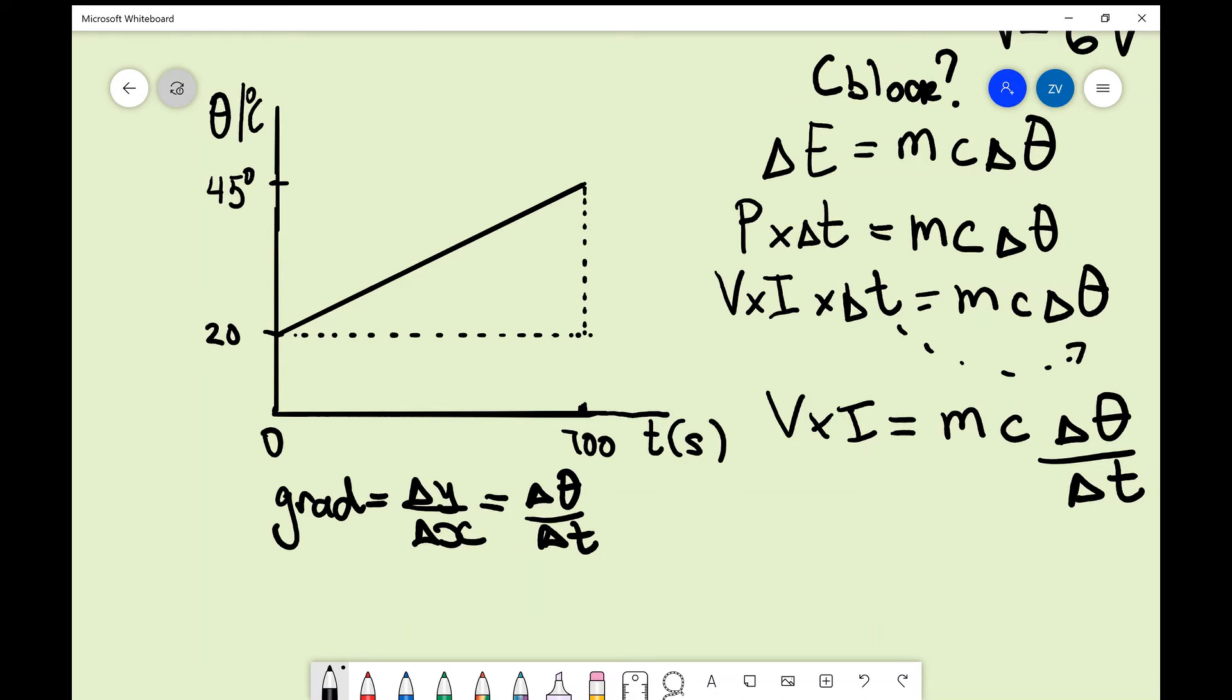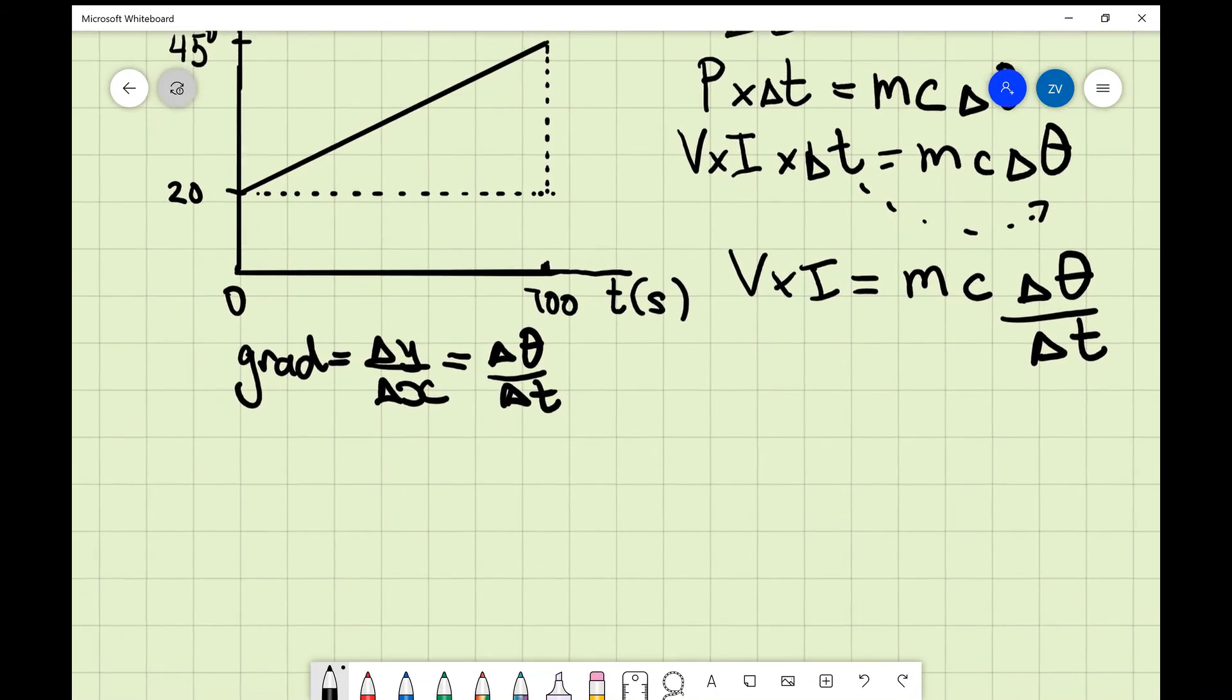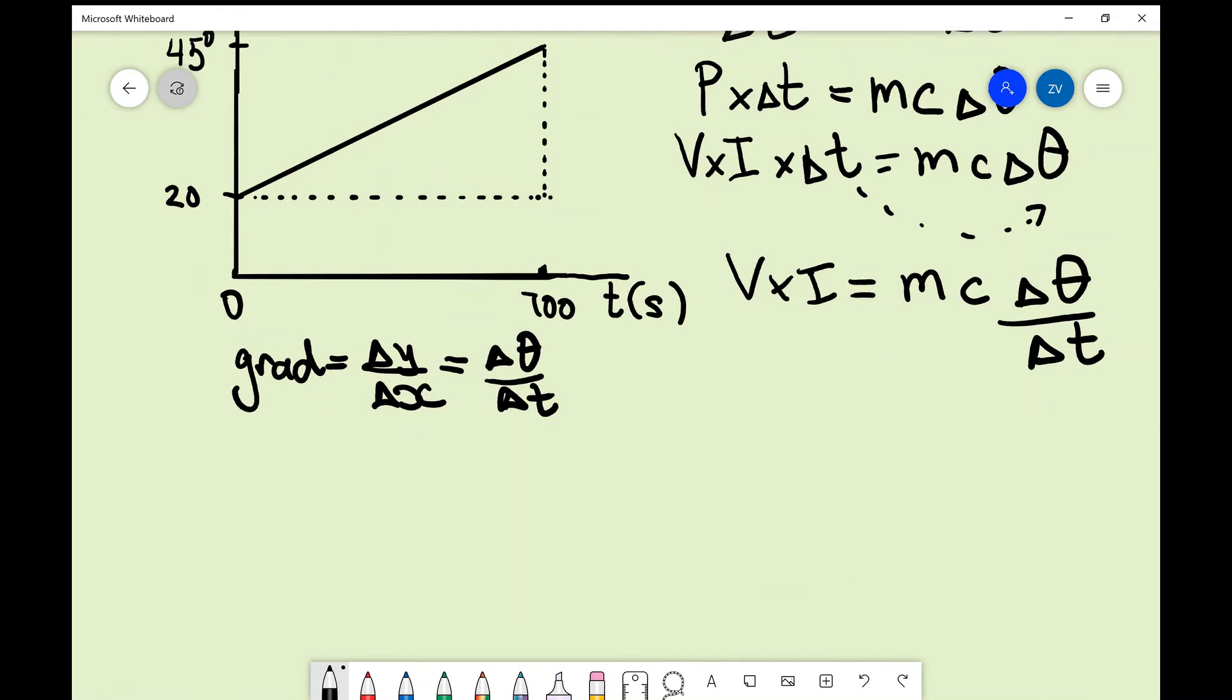So I can just write this as the gradient of this graph. So we can just say that V times I is equal to mc times the gradient. I'm going to call that just grad.